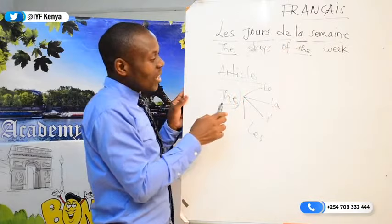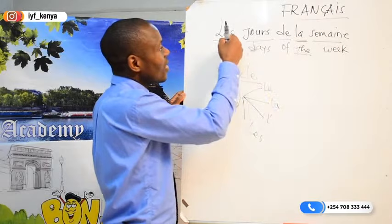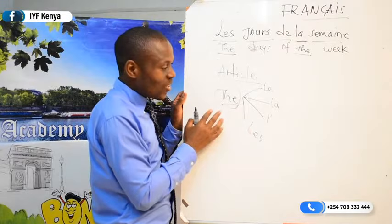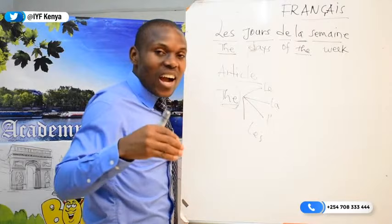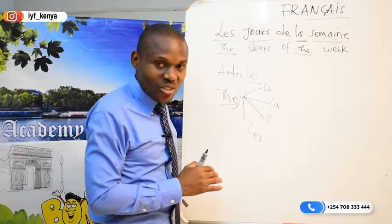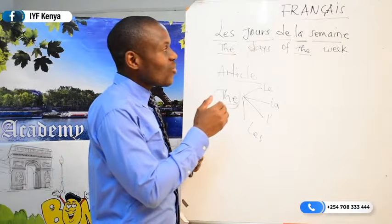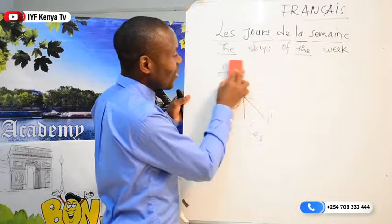You may wonder why we have 'le' there and 'la' there — this is because of the article. 'The' in French can mean 'le,' 'la,' 'l apostrophe,' or 'les.' Next lesson I will teach you where and when to use these different articles. But since it is not today's lesson, let us continue with the days of the week.